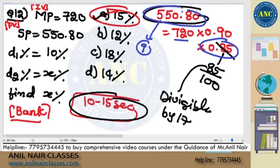550.80. 17 threes are 51, 40. 17 twos are 34, 68. Very, very easy questions.